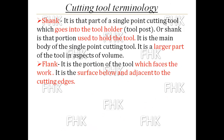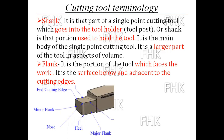First is the shank. It is that part of the single point cutting tool which goes into the tool holder, and that tool holder in the lathe machine is the tool post. When you hold the single point cutting tool in that tool post, the ungrounded portion — the portion of the tool which is in the tool post — is called the shank. Shank is that portion used to hold the tool. It is the main body of the single point cutting tool and the larger part of the tool in terms of volume.